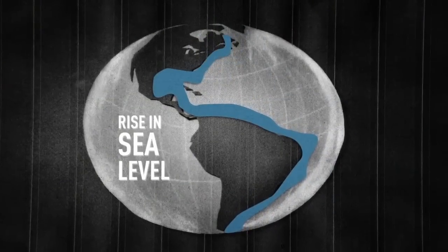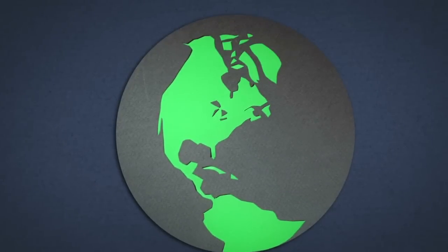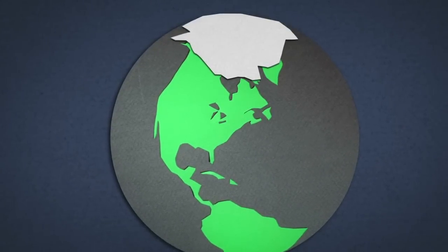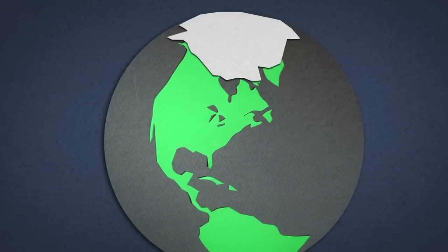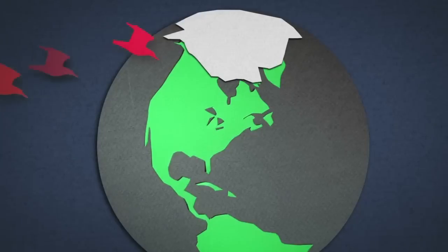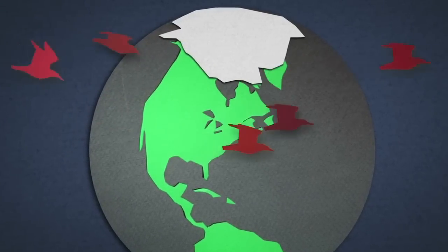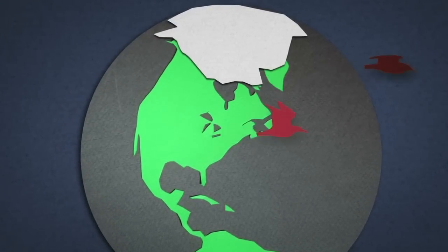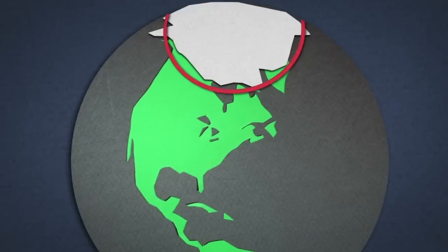Global warming has also increased precipitation levels, which means increased snowfalls in the Arctic. This makes it harder for the Red Knot Rufa to find good nesting conditions. The birds sometimes have to move to a higher latitude in search of better conditions, which leaves less time for breeding once they arrive.